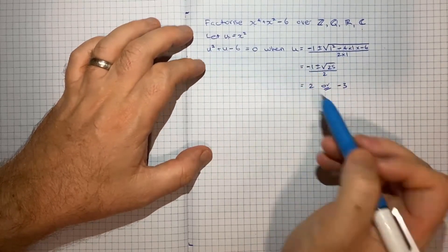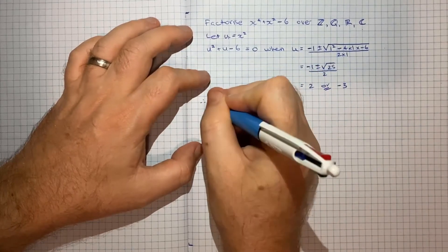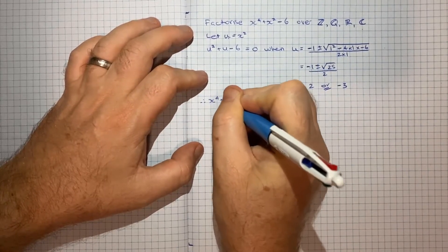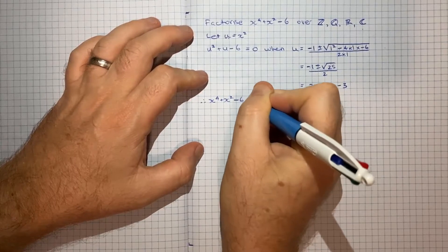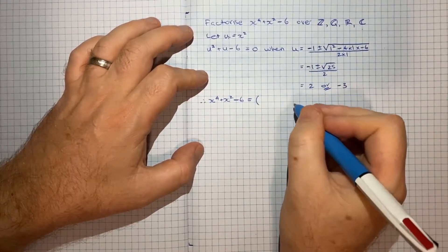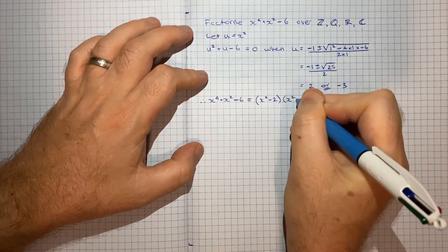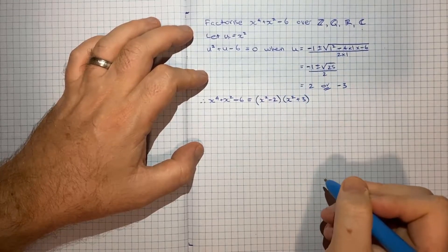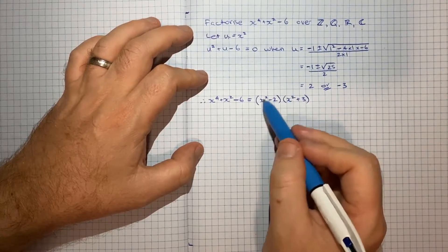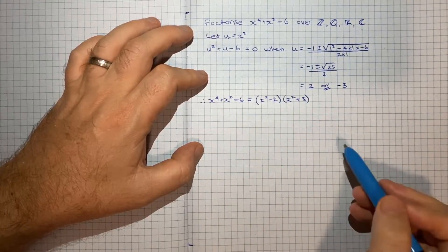So now if we put our x squared back in, what we can say is that x to the 4 plus x squared minus 6 is equal to x squared minus 2, x squared plus 3. And if you wanted to check, you could expand this out and see that you get back to where you started.